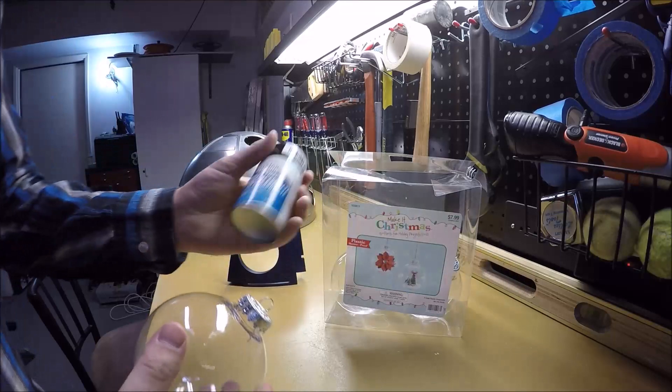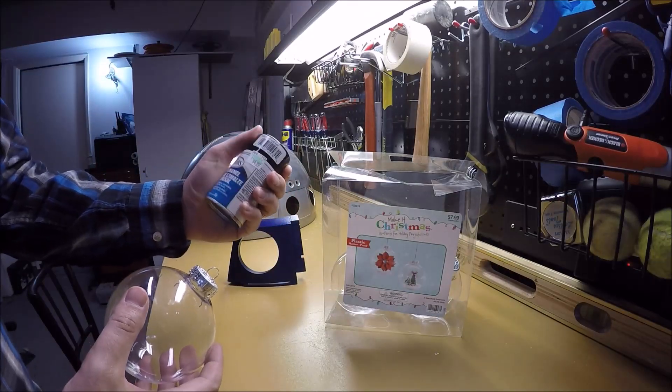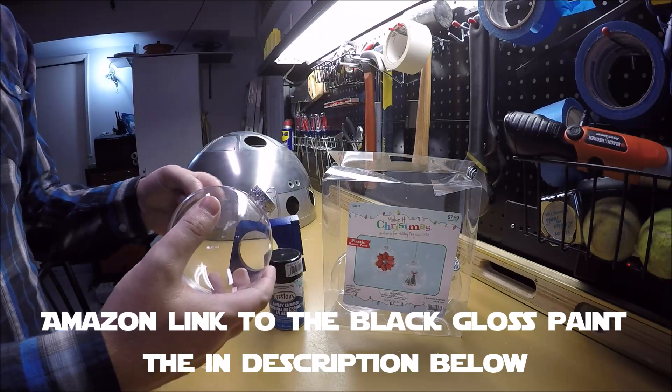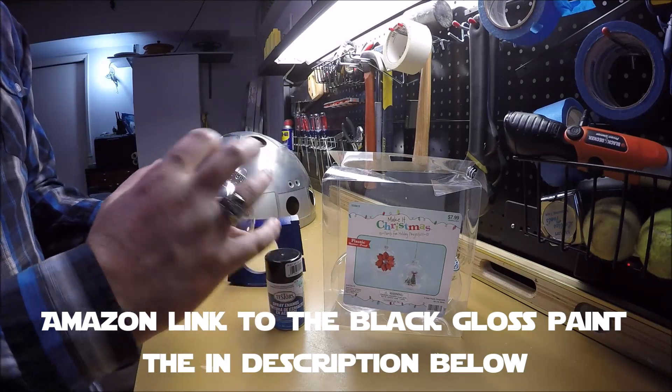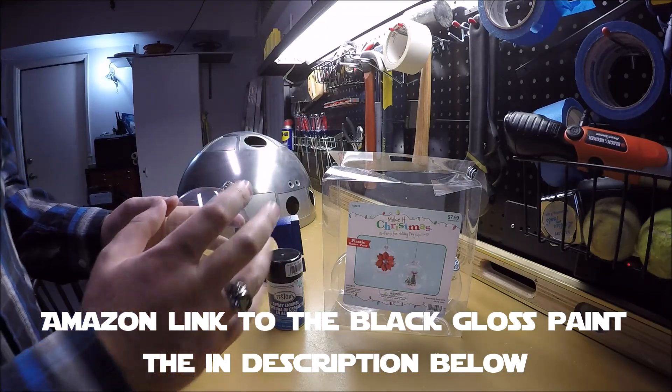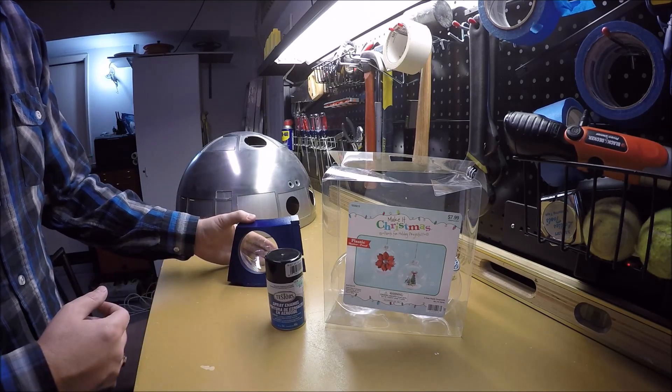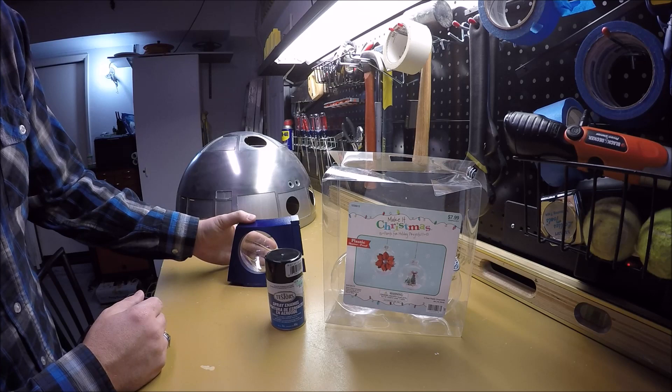And then I'm going to use some of this black gloss paint. I'm going to paint the inside of the ball, not the outside, so you still get the reflective coloration from the plastic ball. And we'll see how it goes through the process of making it.